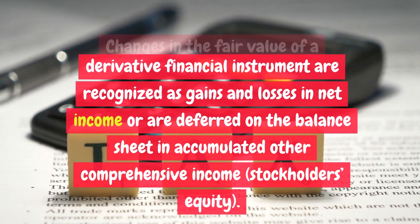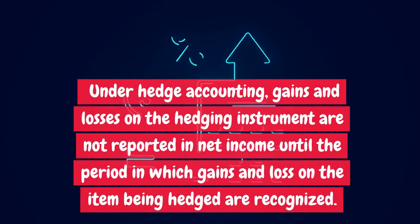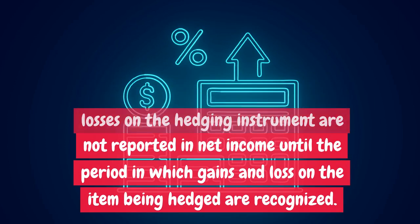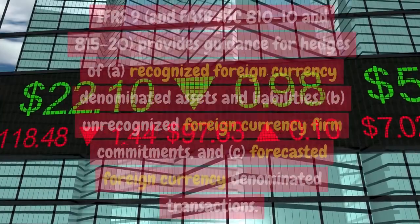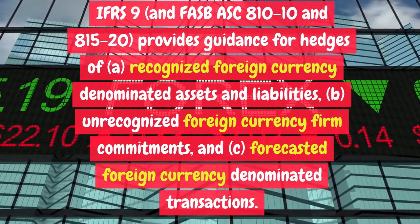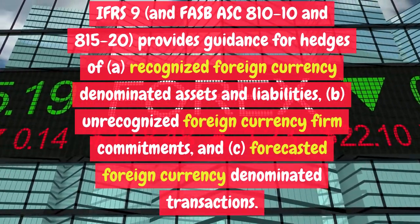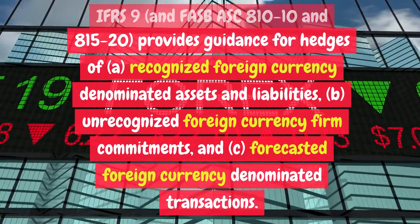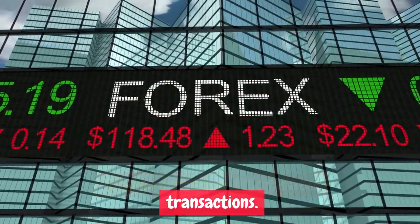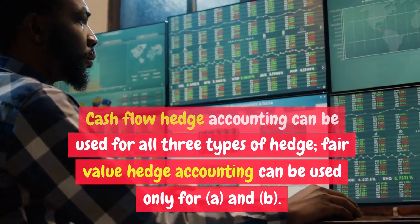Changes in the fair value of a derivative financial instrument are recognized as gains and losses in net income, or are deferred on the balance sheet in accumulated other comprehensive income under hedge accounting. Gains and losses on the hedging instrument are not reported in net income until the period in which gains and losses on the item being hedged are recognized. IFRS 9 and FASB ASC 810-10 and 815-20 provide guidance for hedges of: (a) recognized foreign currency denominated assets and liabilities, (b) unrecognized foreign currency firm commitments, and (c) forecasted foreign currency denominated transactions. Cash flow hedge accounting can be used for all three types; fair value hedge accounting can be used only for (a) and (b).